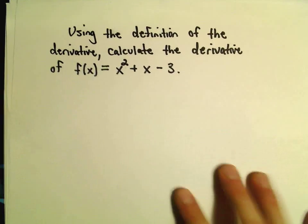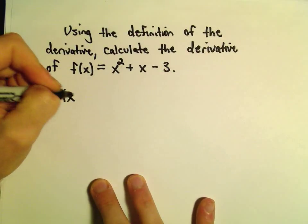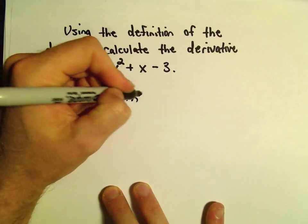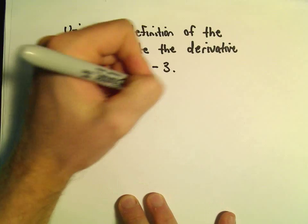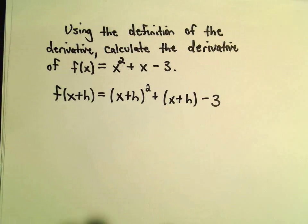Maybe we can just do it kind of a piece at a time here. We've got to calculate f of x plus h. Well, again, all that says to do is plug in x plus h everywhere that there's an x. And then we're going to have to simplify that down a little bit.